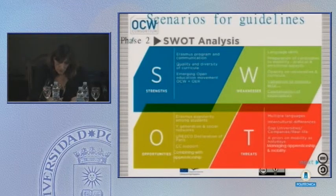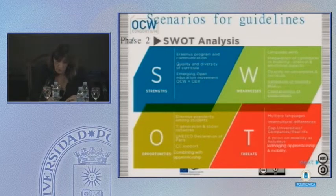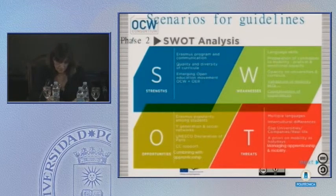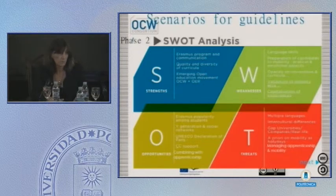Looking at the SWOT analysis, we can identify current weaknesses and threats to student mobility such as language issues, cultural differences, and opacity of university study programs. For each of these problems, we will show how open courseware can help to solve them.